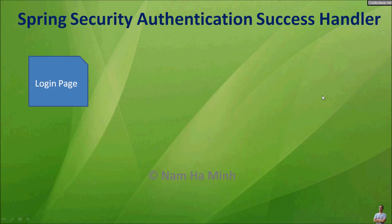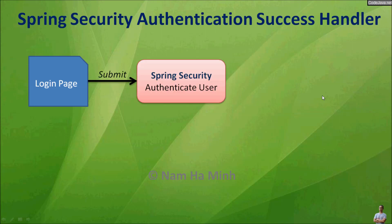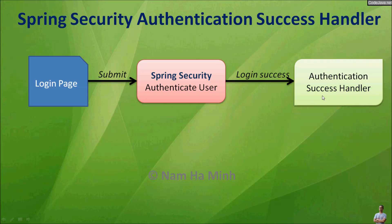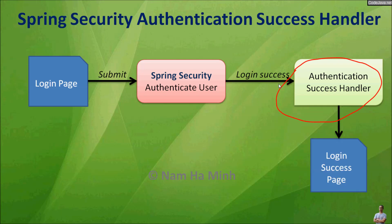This is a typical authentication workflow: a user enters credentials in the login page and submits the form to the server. Spring Security will authenticate the user, and if login is successful, the application will display the login success page — typically the home page. Spring Security allows programmers to intervene this process by creating an authentication success handler, which will be executed upon successful authentication to perform custom logics.